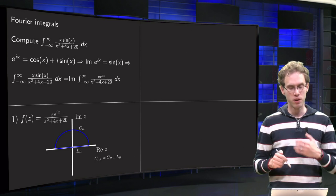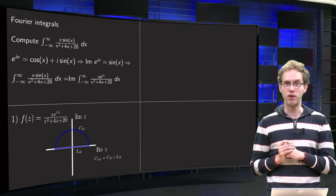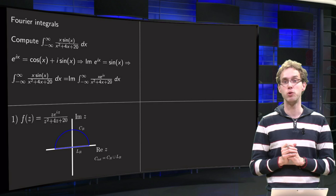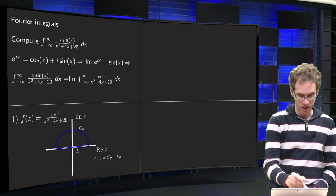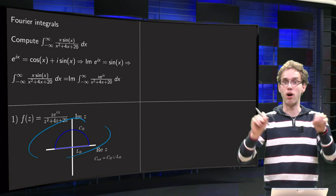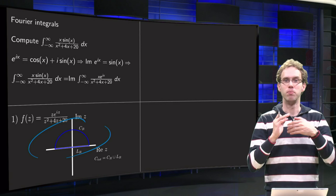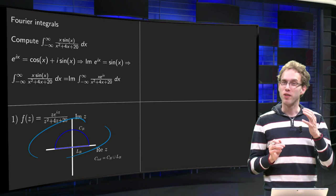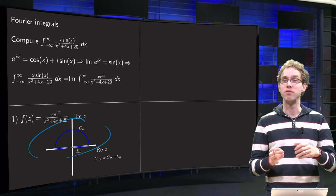So what function do we take? f(z) = z·e^(iz) / (z² + 4z + 20). Our contour must include the real axis, since we integrate from −∞ to +∞, and we must close it in the upper half-plane. The contour consists of C_R, a semicircle, and L_R on the real axis, where R is large but finite. That's the first — and always the hardest — step: think of what function and contour to use, and plan ahead whether it will work.